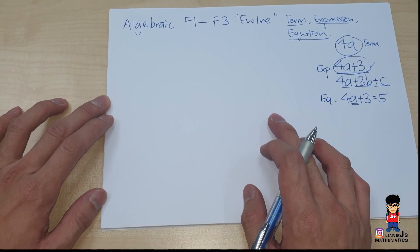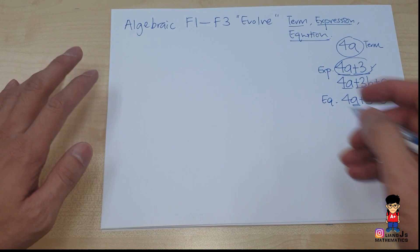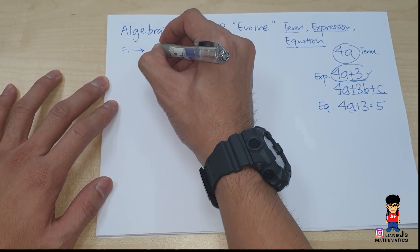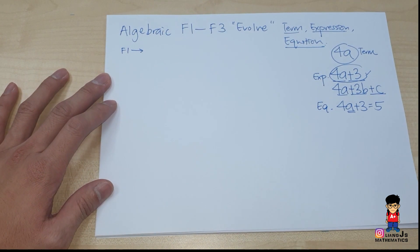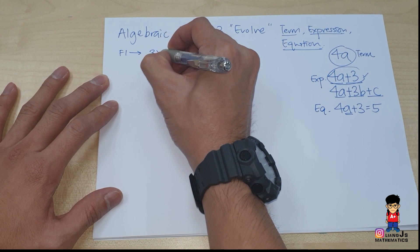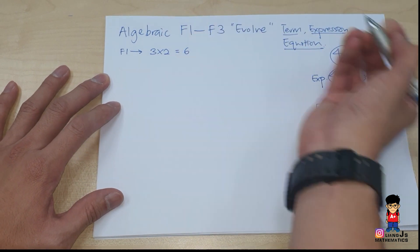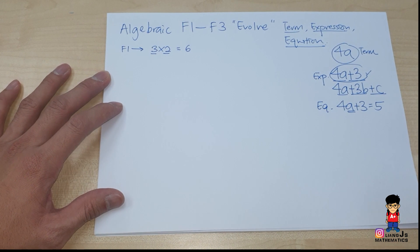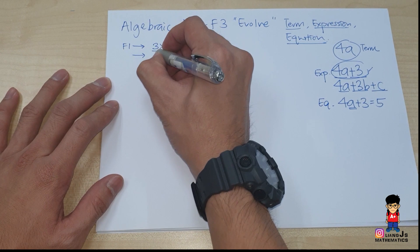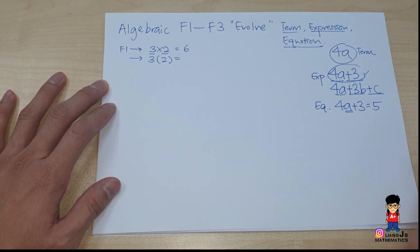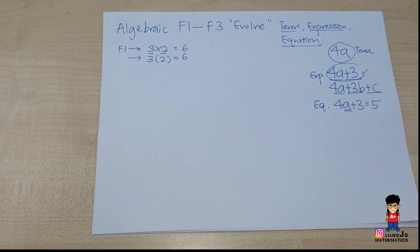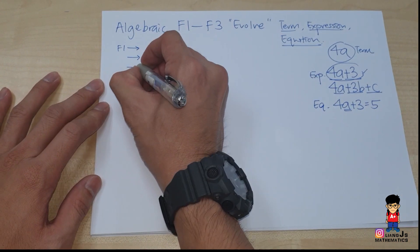The evolved thing is about how Form 1 to Form 3 algebra progresses. In Form 1, we learn very basic stuff — like 3 times 2 equals 6, which we already memorized from primary. Then we move into 3 bracket 2, where bracket means times — you still get 6. Nothing special yet; it's a slow evolution to the next stage.